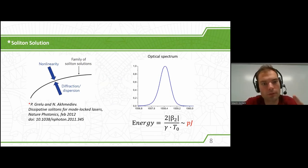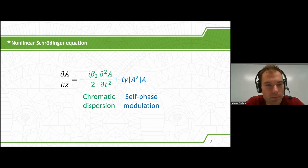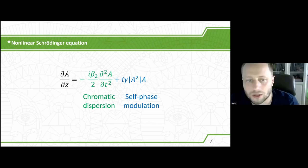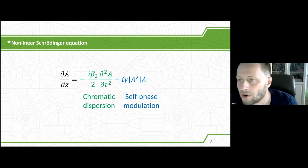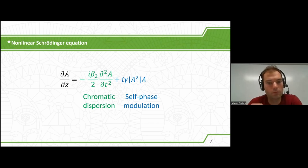Sorry, a question about this equation. Is it like a paraxial approximation? It is an approximation of the slowly varying envelope. Therefore, you get only the first derivative in the Z coordinate. Yes. Thanks.